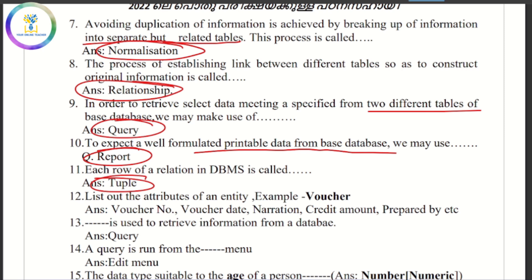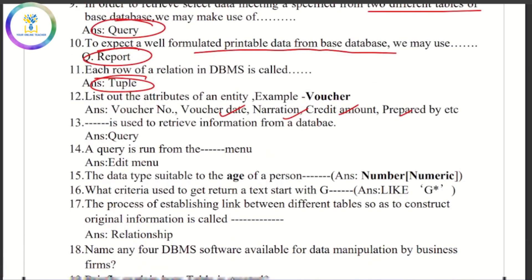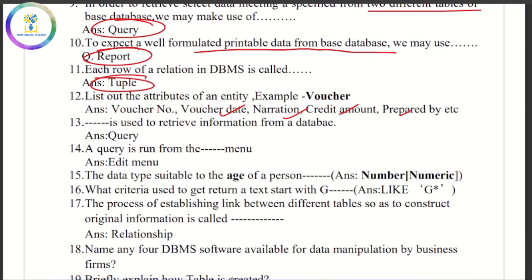Examples of attributes include: voucher number, voucher date, narration, credit amount, and prepared by. A query is used to retrieve information from the database.